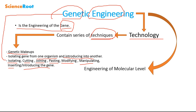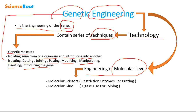Genetic engineering is engineering at the molecular level. Molecular tools such as molecular scissors — enzymes called restriction enzymes — are used for cutting the DNA into fragments. For example, if we have a whole DNA and we want to get only the desired gene, restriction enzymes are used for the cutting.